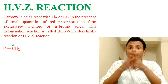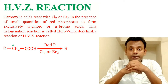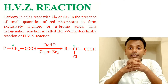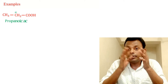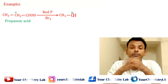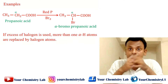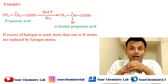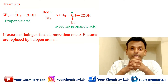Now the reaction: carboxylic acid reacts with chlorine or bromine in the presence of red phosphorus to give alpha-chloro acid. Propanoic acid reacts with Br2 in the presence of red phosphorus to give alpha-bromo propanoic acid. If an excess of halogen is used, more than one alpha hydrogen are replaced by halogen atoms.